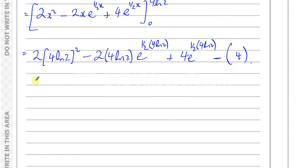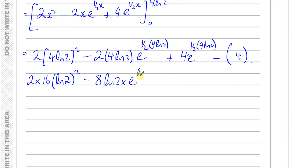Tidying up: 2 times (4 ln2) squared equals 32(ln2) squared. The exponent a half times 4 ln2 equals 2 ln2 equals ln4, so e to the power of ln4 equals 4. We use the key identity that e to the power of ln4 equals 4, because e and ln are inverses of each other — a composite of a function with its inverse returns the input.